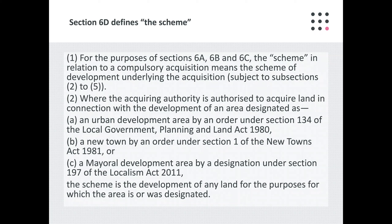The statement of reasons must also contain a justification by reference to the scheme. So it's essential from the outset that you understand what the scheme is and what its extent is. Section 6D defines the scheme. For the purposes of Section 6A, B and C, the scheme in relation to a compulsory acquisition means a scheme of development underlying the acquisition. Where the acquiring authority is authorised to acquire land in connection with the development of an area designated as an urban development area, a new town, or mayoral development area, the scheme will be defined as the development of any land for the purposes for which the area is or was designated.